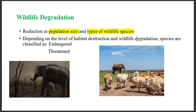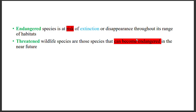An endangered species is a species that is at risk of extinction or disappearance throughout its range of habitats. Human activities that have destroyed the natural habitat of wildlife have accelerated the rate of extinction for both plant and animal species.